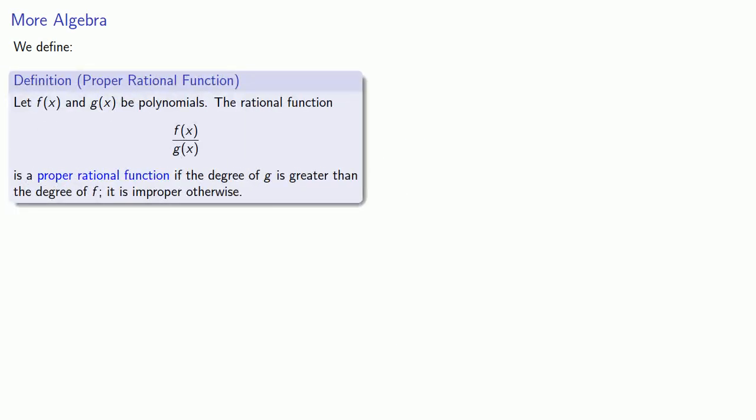Let f(x) and g(x) be polynomials. The rational function f(x) over g(x) is a proper rational function if the degree of g is greater than the degree of f. It is improper otherwise.